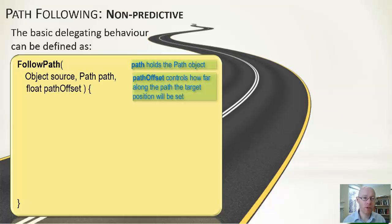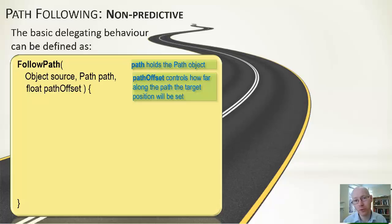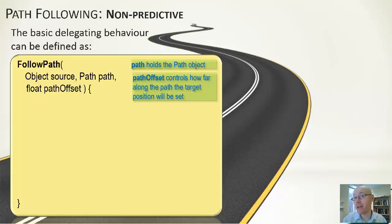We have a path offset, which is the notion of how far along the path we should look ahead. The path position could span from 0 to 1, where 0 is the start of the path and 1 is the end. A path offset of 0.05 would mean we look one twentieth of the path distance ahead. Equally, if the path is measured in meters — say 800 meters long — a path offset of 10 means we look 10 meters ahead. The path and the path offset need to use the same defined notion of distance.